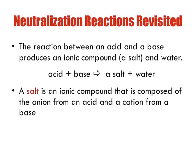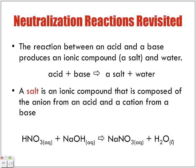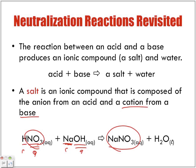Usually the H from the acid combines with the hydroxide to form the water. The anion from the acid and the metal cation from the hydroxide of the base form the salt. So the cation from the base with the anion of the acid form our ionic compound — our salt.